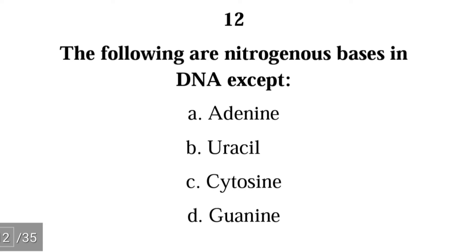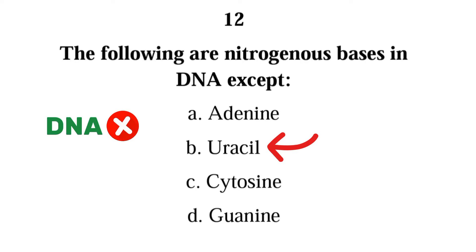Number twelve: the following are nitrogenous bases in DNA except — adenine, uracil, cytosine, guanine. The correct answer is B, uracil. Uracil is not a nitrogenous base in DNA; it is a nitrogenous base in RNA.